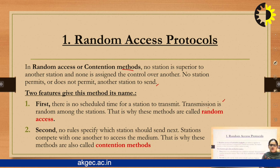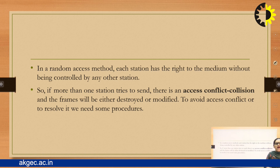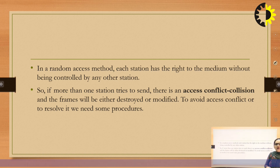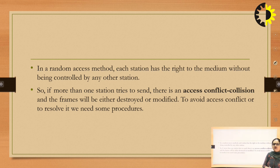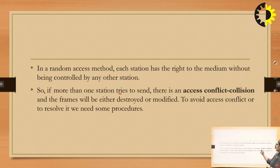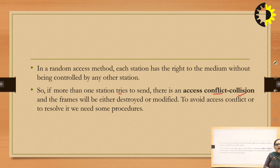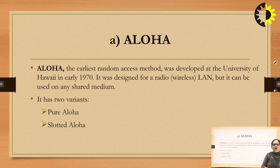In random access method, each station has an equal right to the medium without being controlled by any other station. If more than one station tries to send their data over the network, there is a possibility of conflict or collisions — the frames will either be destroyed or modified by another frame. To avoid the access conflict or to resolve the collisions, we need some procedures or protocols. Aloha is the random access control protocol which is used to avoid collisions over the transmission media when multiple frames from different devices are coming over the network.